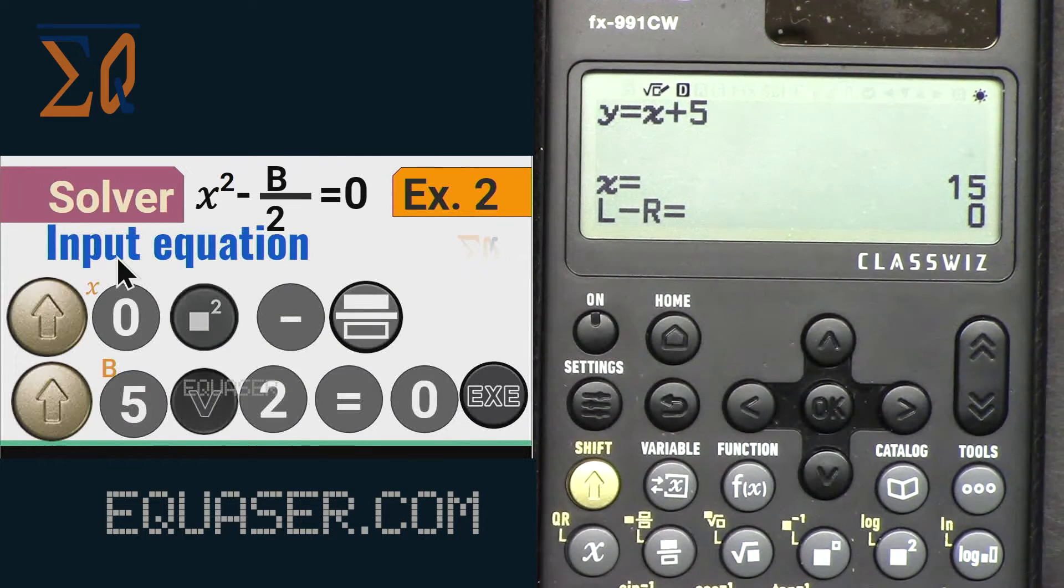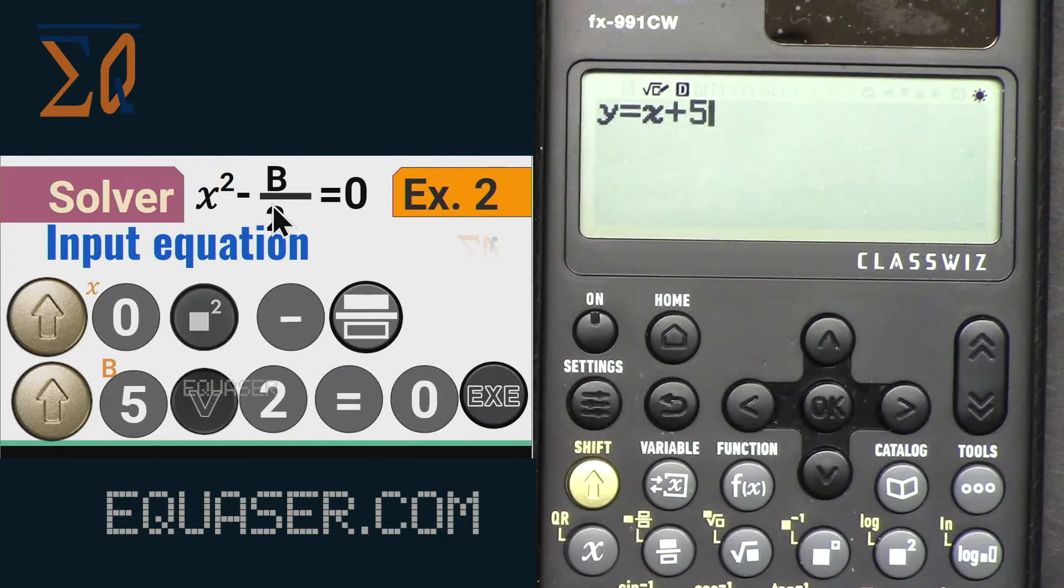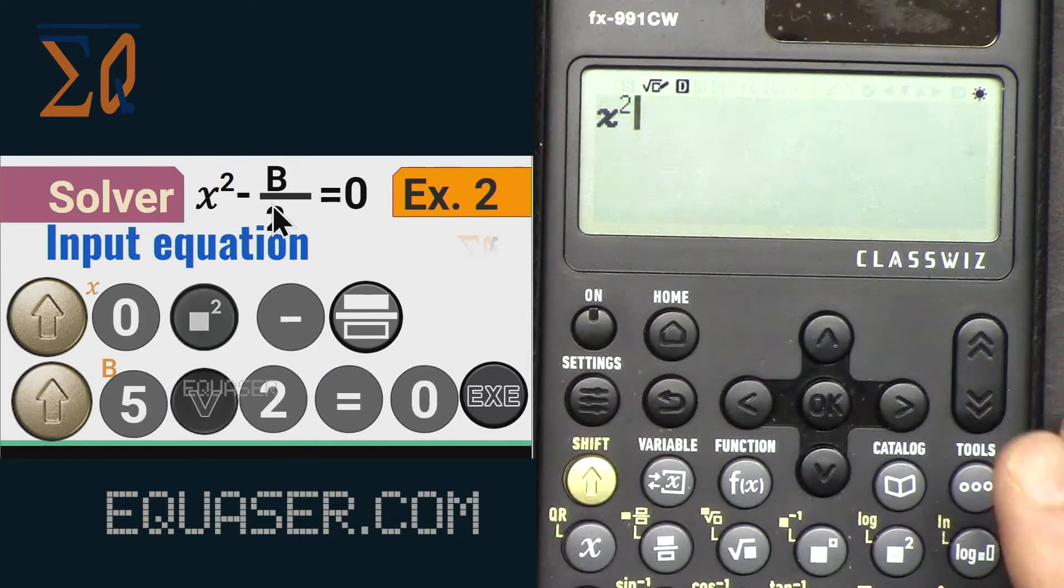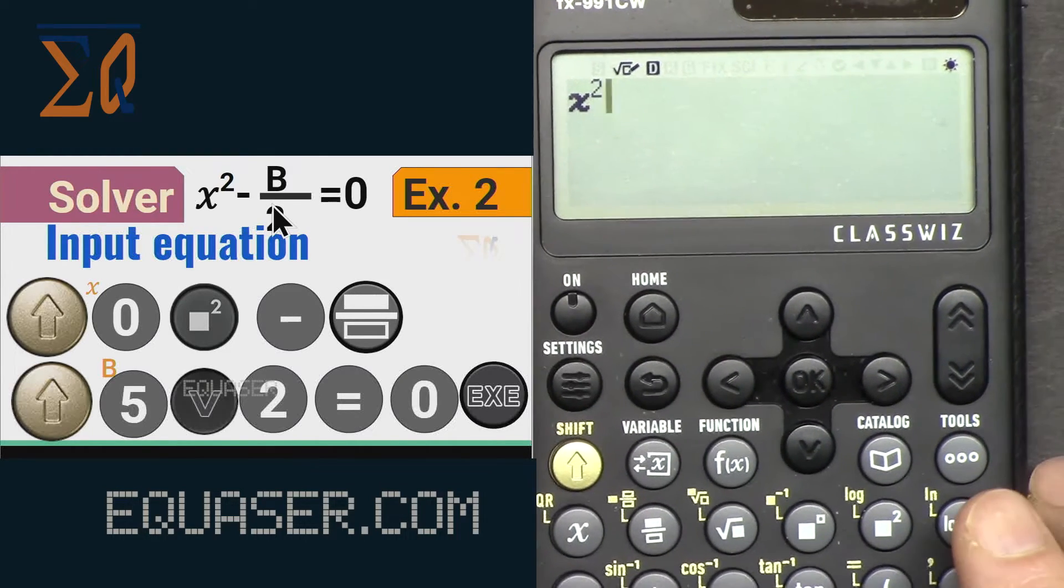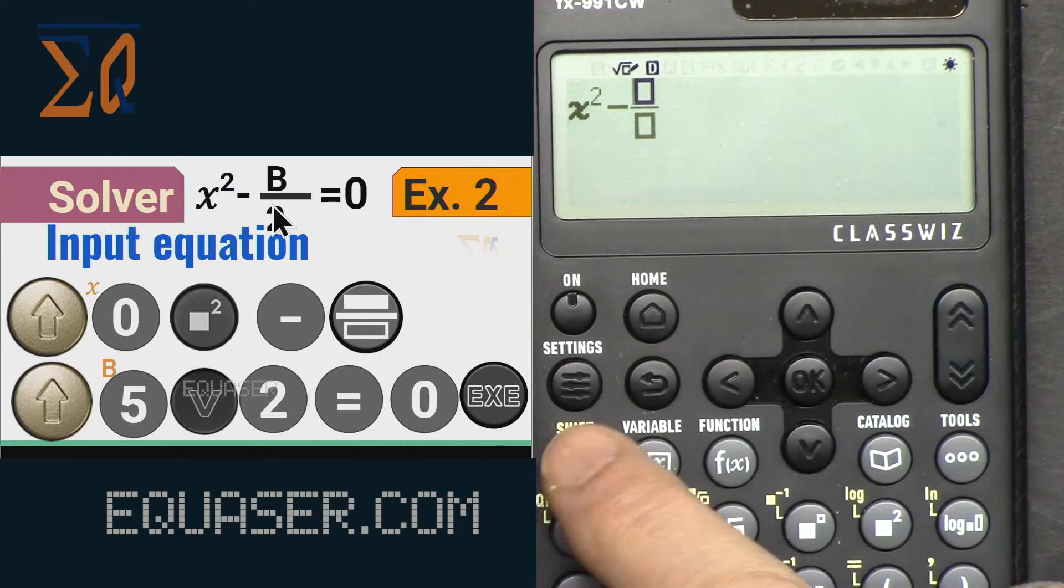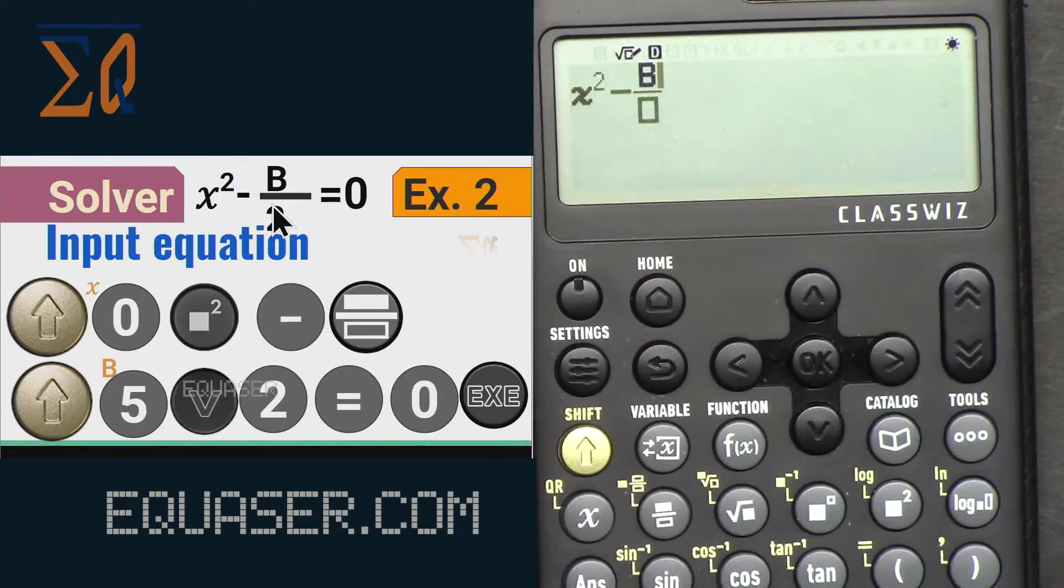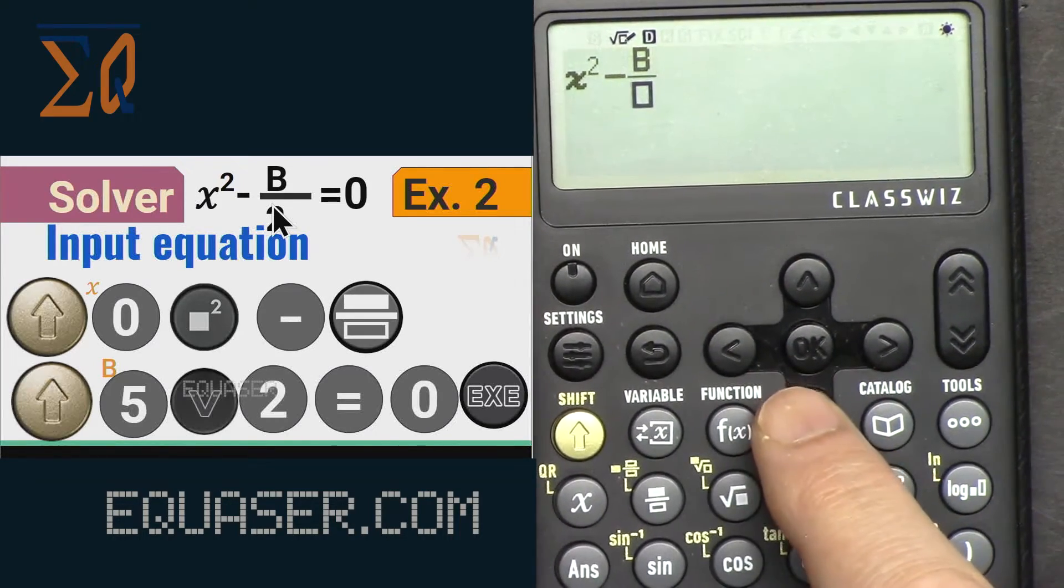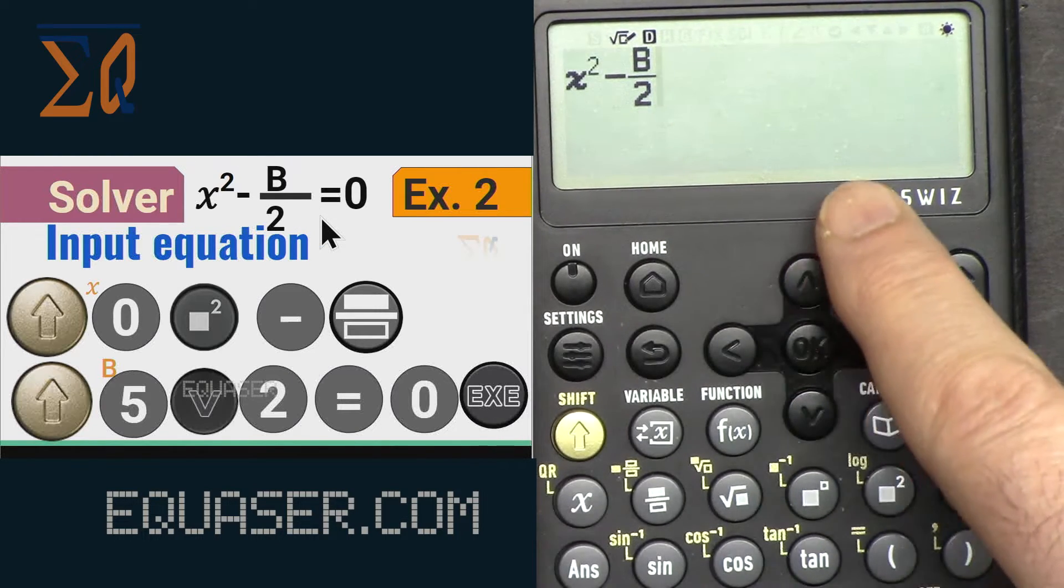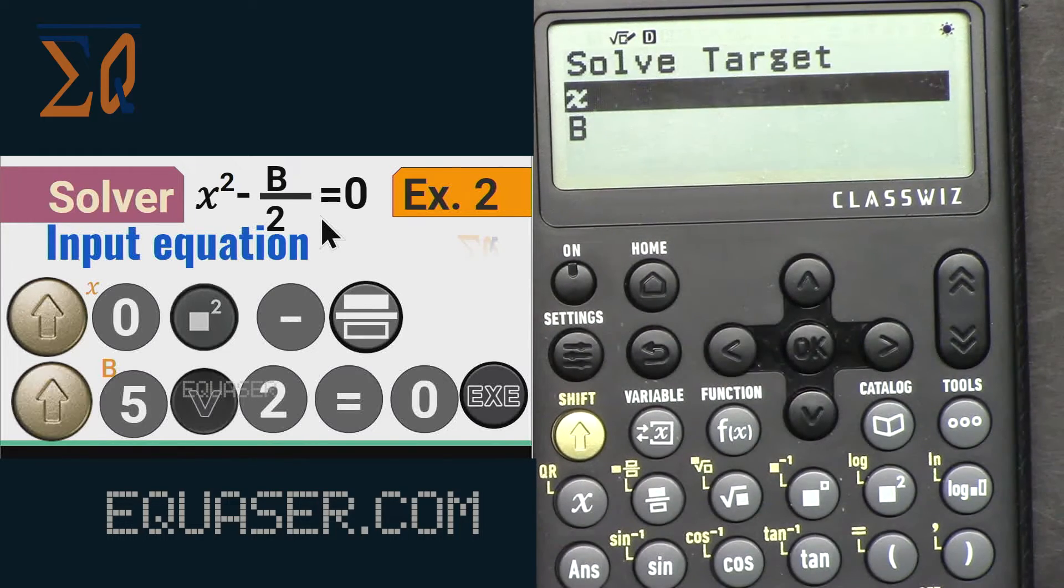Now let's input our equation. All clear. We have x squared. Let's delete this. Alpha x squared minus this b, alpha b, b is this 5, and then go down 2, and this way alpha equal, and then 0. Now press equal sign.